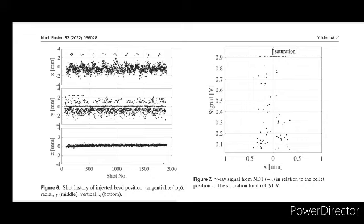The time history of bead distribution clarifies the periodic pattern of the injector along the tangential direction. Figure 6 shows the shot history of the injected bead position: tangential X top, radial Y middle, vertical Z bottom.